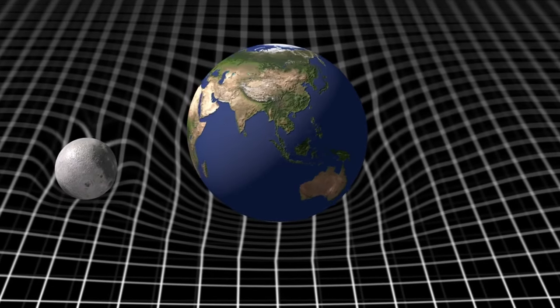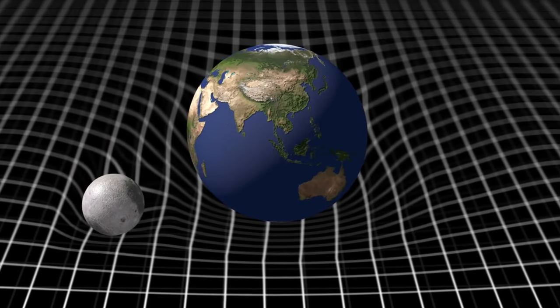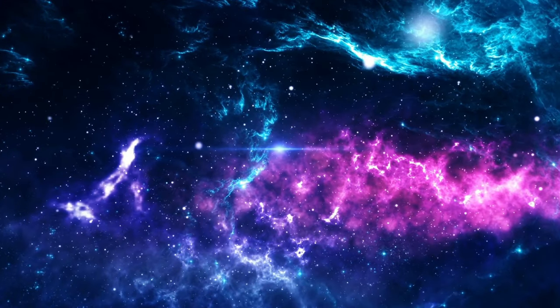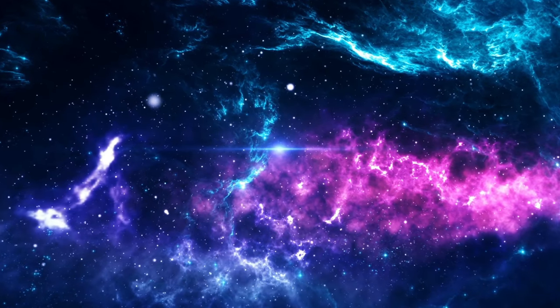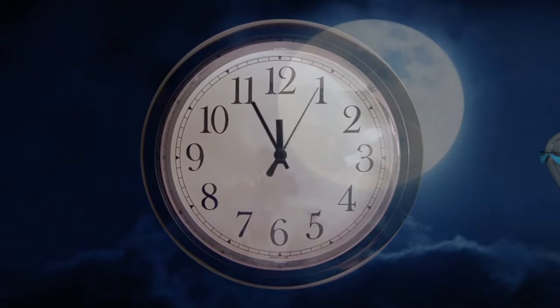General Relativity, also known as the General Theory of Relativity, is a big idea in physics created by Albert Einstein in 1915. It's the current way we understand gravity. Einstein challenged Newton's thinking of gravity as a force between objects, saying it's actually a bending or curving of space and time.